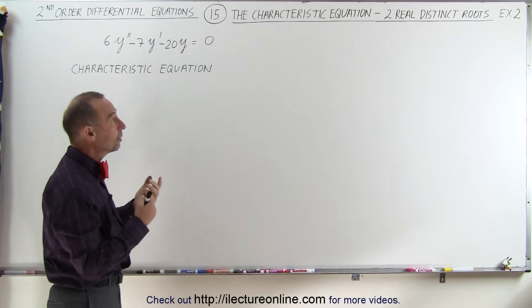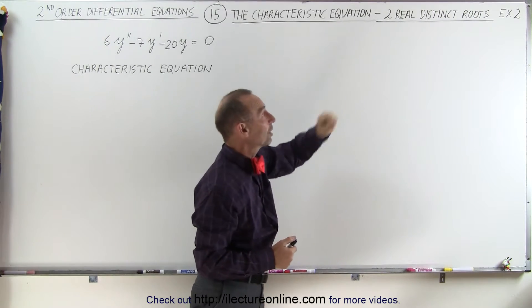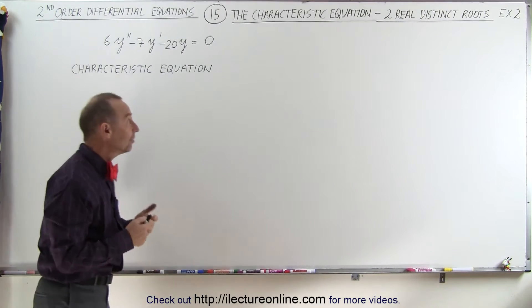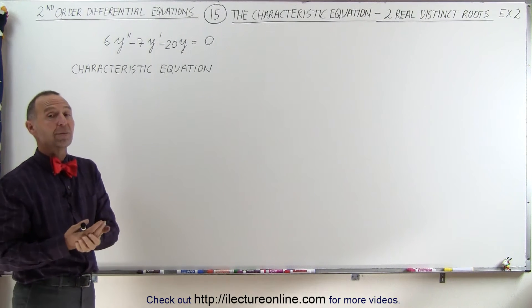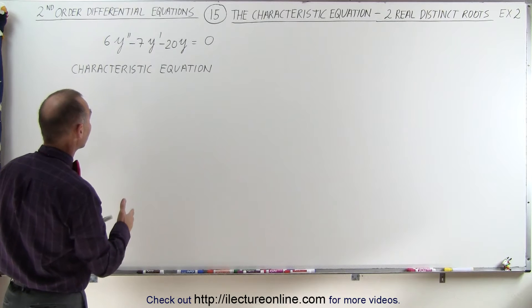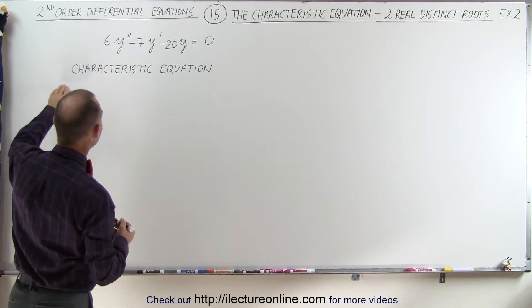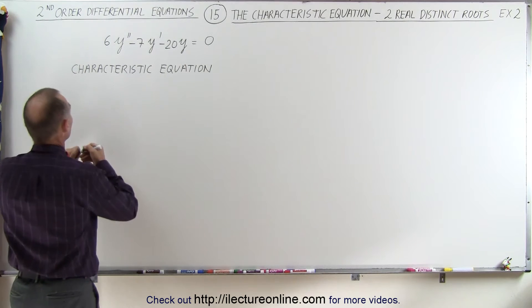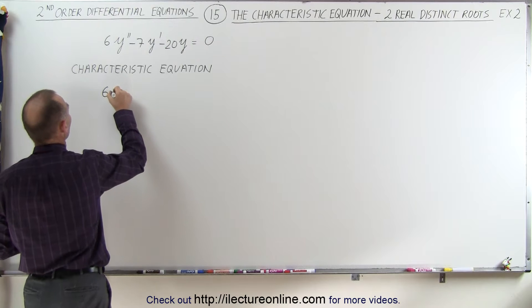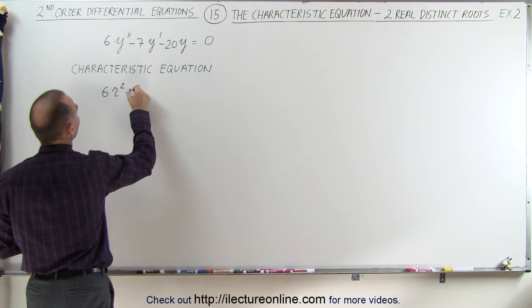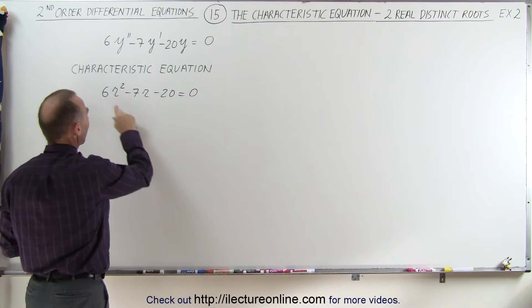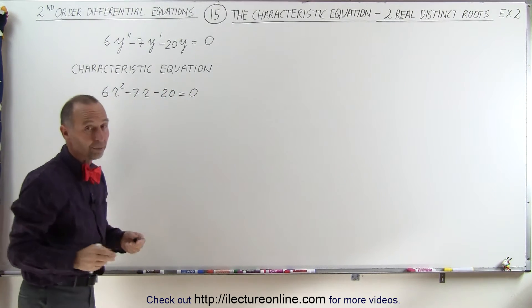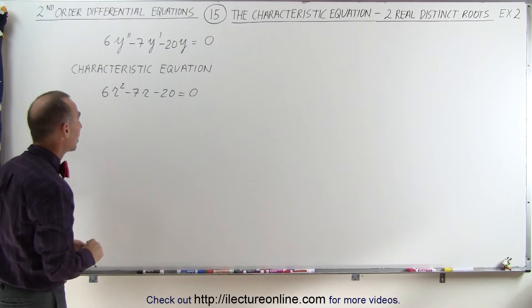We'll use the characteristic equation. This equation will have two real distinct roots, and it becomes more of an algebraic exercise. First, we get the characteristic equation: 6r² - 7r - 20 = 0. Now we have to find the two distinct roots by solving this quadratic equation.